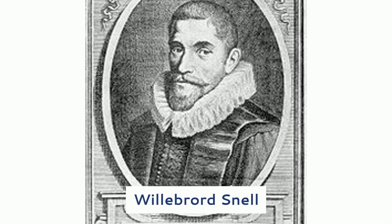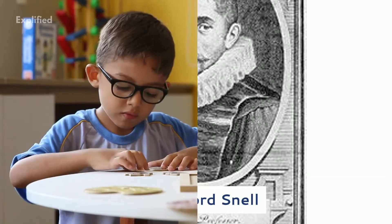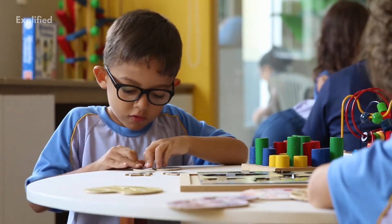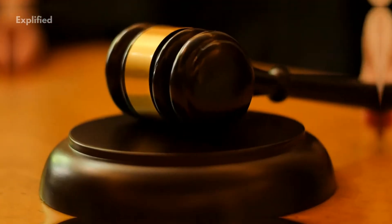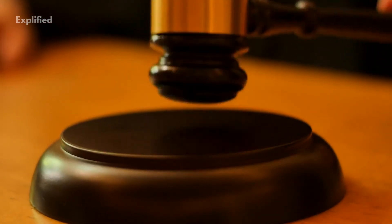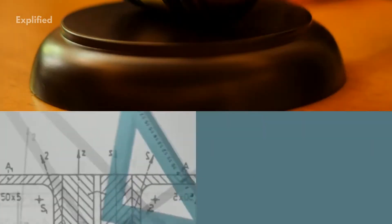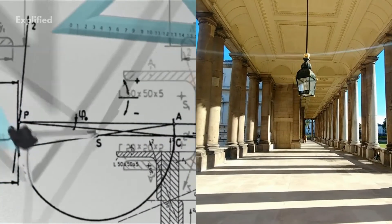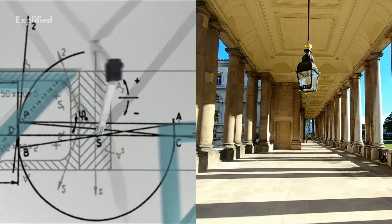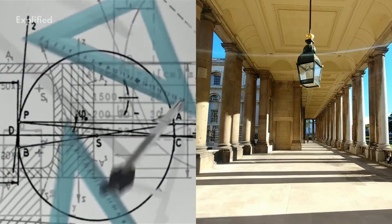Willebert Snell was born in the year of 1580 in Leyden. He began to study mathematics at a very young age. He entered the University of Leyden and initially studied law but soon he turned his attention towards mathematics and started teaching at the university by the time he was just 20.